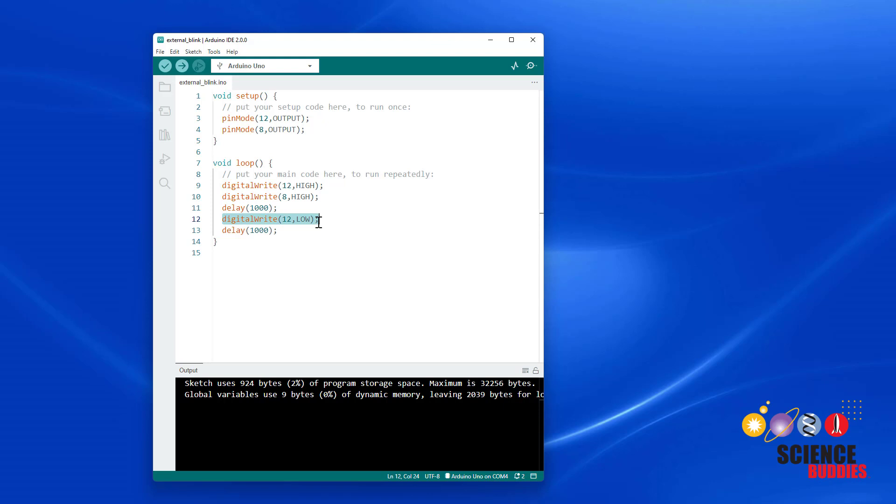So now the program tells the Arduino to set both pins 12 and 8 as outputs, turn both pins 12 and 8 high, wait for a second, turn both pins 12 and 8 low, and wait for a second. I can upload this new program to my Arduino.